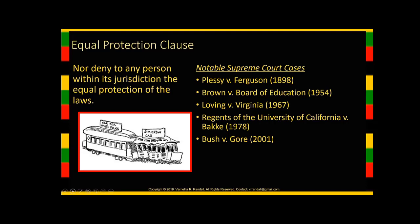Brown v. Board of Education overturned the doctrine specifically as related to education. Loving v. Virginia basically said you can't tell people who to marry — there were a lot of laws on the books saying Black people couldn't marry white people. That was 1967. Regents of University of California v. Bakke was about affirmative action. And Bush v. Gore dealt with equal protection in voting.